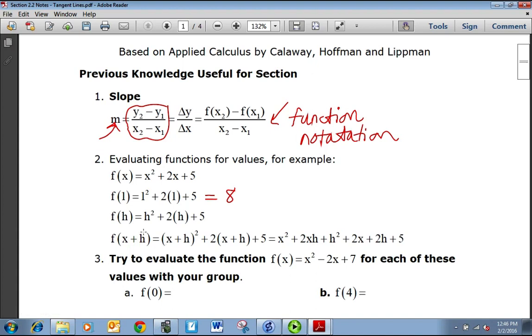And the one that students have the hardest time with, f of x plus h. You're plugging a whole expression in for x. Everywhere you see an x, you're replacing it with x plus h. So we get x plus h squared plus 2 times x plus h plus 5. Then you want to foil out the x plus h squared, which is x squared plus 2xh plus h squared. It's a good idea to memorize that.